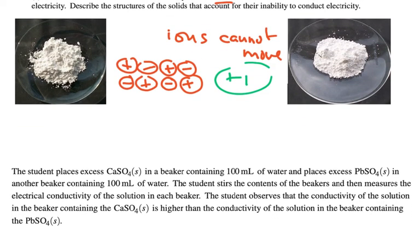Part B. The student places excess calcium sulfate in a beaker containing 100 milliliters of water and places excess lead sulfate in another beaker containing 100 milliliters of water. The student stirs the contents of the beaker and then measures the electrical conductivity of the solution in each beaker. The student observes that the conductivity of the solution in the beaker containing the calcium sulfate is higher than the conductivity of the solution in the beaker containing lead sulfate.